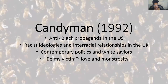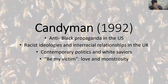The two films being discussed today are Candyman and Get Out. The layout will cover anti-Black propaganda in the US, racist ideologies and interracial relationships in the UK, contemporary politics, white saviorhood as it appears in Candyman, and the depiction of monsters and love in Candyman. Starting with some history to provide context for fully understanding the problematic elements.